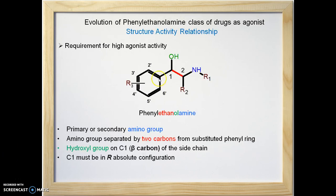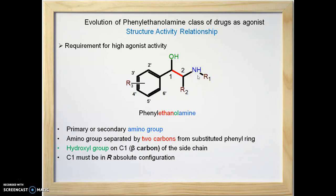Here is the structure-activity relationship of phenylethanolamine. In the phenylethanolamine structure, what are the minimum requirements for high agonist activity? The requirements are: presence of a primary or secondary aliphatic amino group, separated by two carbons from the substituted phenyl ring. The amino group gets protonated at physiological pH, acquires a positive charge, and is involved in ionic interaction with the receptor.